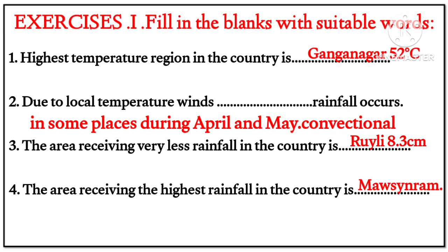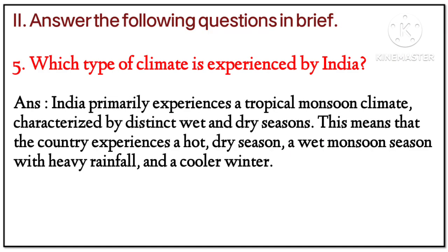Exercise Question 1 — Fill in the blanks: (1) Highest temperature region in the country is Ganganagar — 52 degrees Celsius. (2) Due to local temperature winds in some places during April–May, conventional rainfall occurs. (3) The area receiving very less rainfall is Barmer — 8.3 centimeters. (4) The area receiving the highest rainfall in the country is Mawsynram.